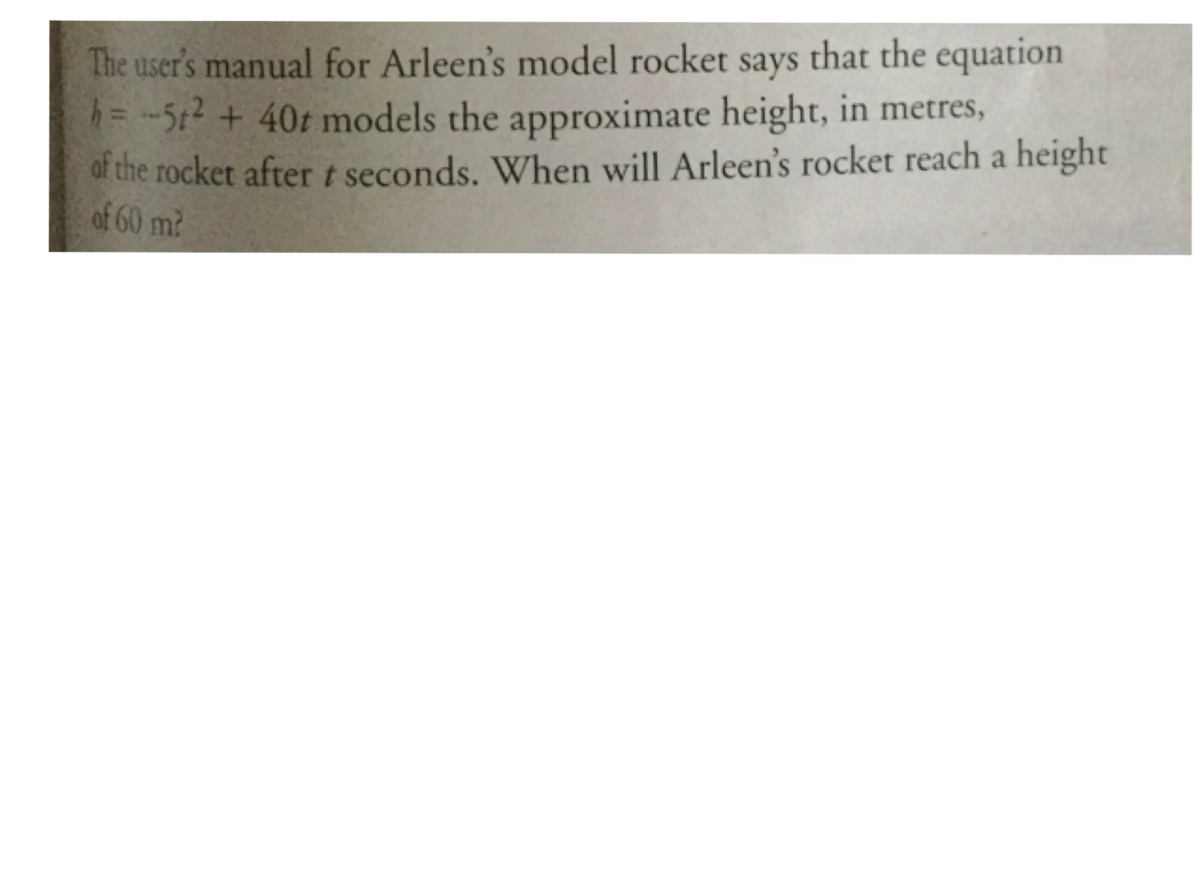We're looking at a model rocket, which is modeled by this equation: h equals negative 5t squared plus 40t. h is height in meters, and t is time in seconds.